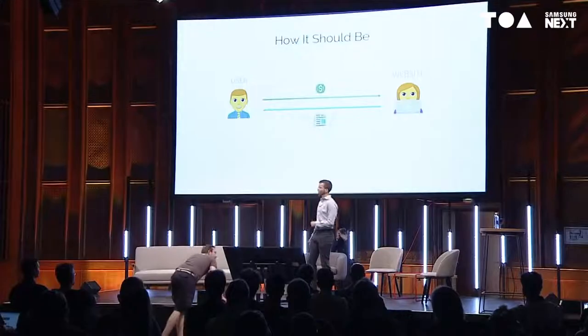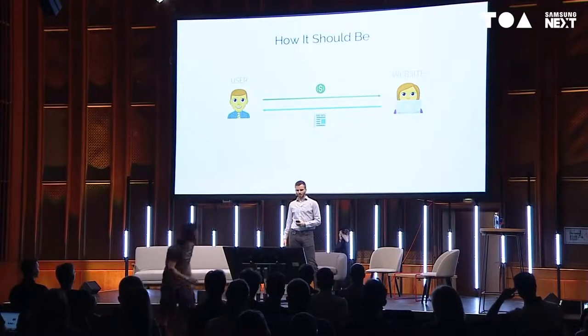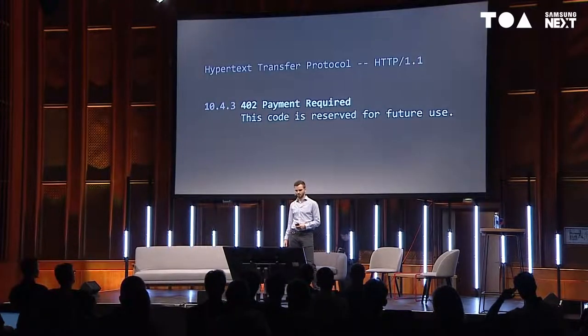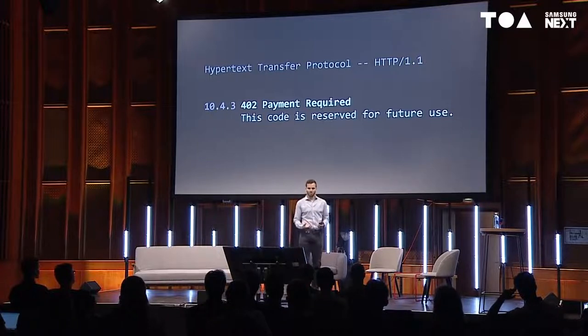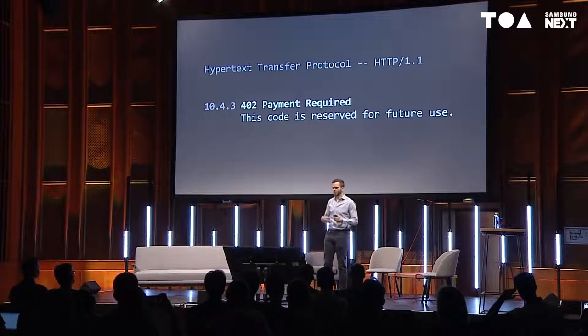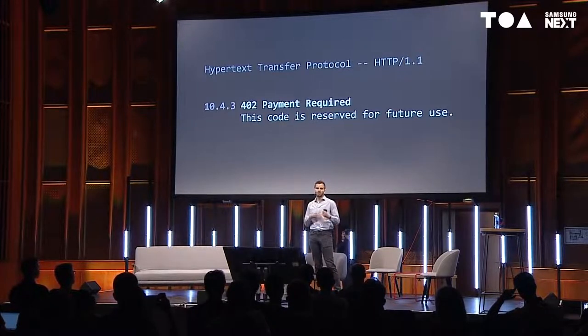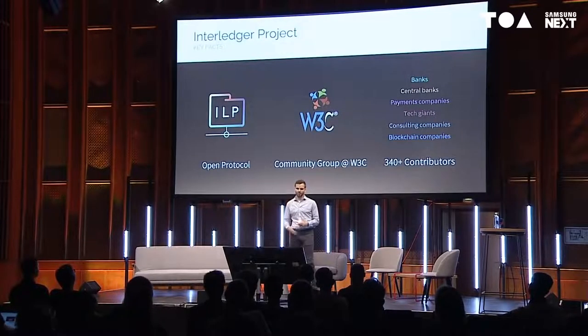This is actually how it should be, and the creators of the web foresaw this. They reserved HTTP error code 402, which essentially means 'you were supposed to pay for this web page and you didn't.' The idea was that maybe there would be some kind of payment protocol behind it. But even now, 30 years later, there still wasn't any protocol like that — until very recently.